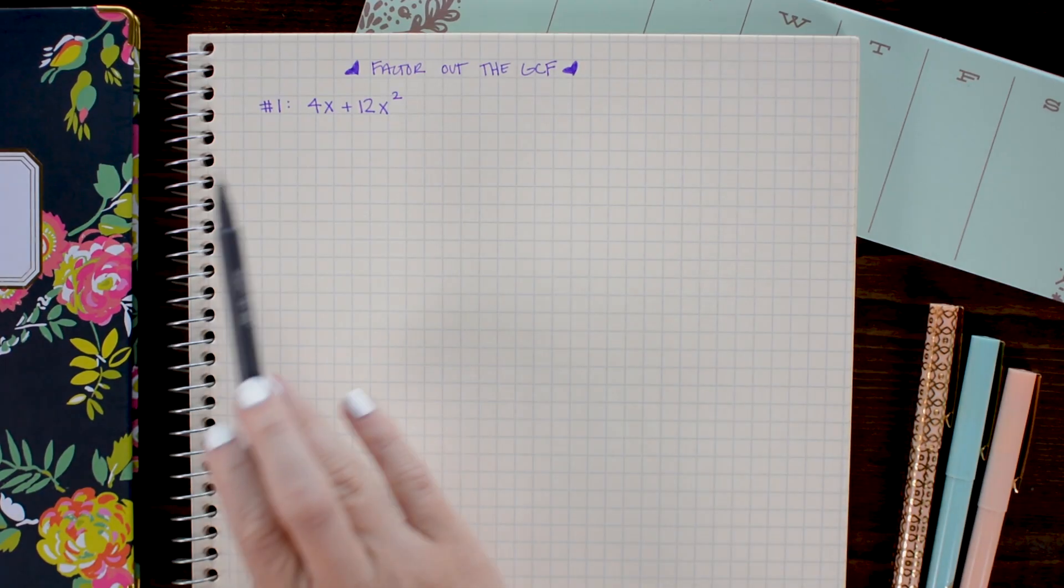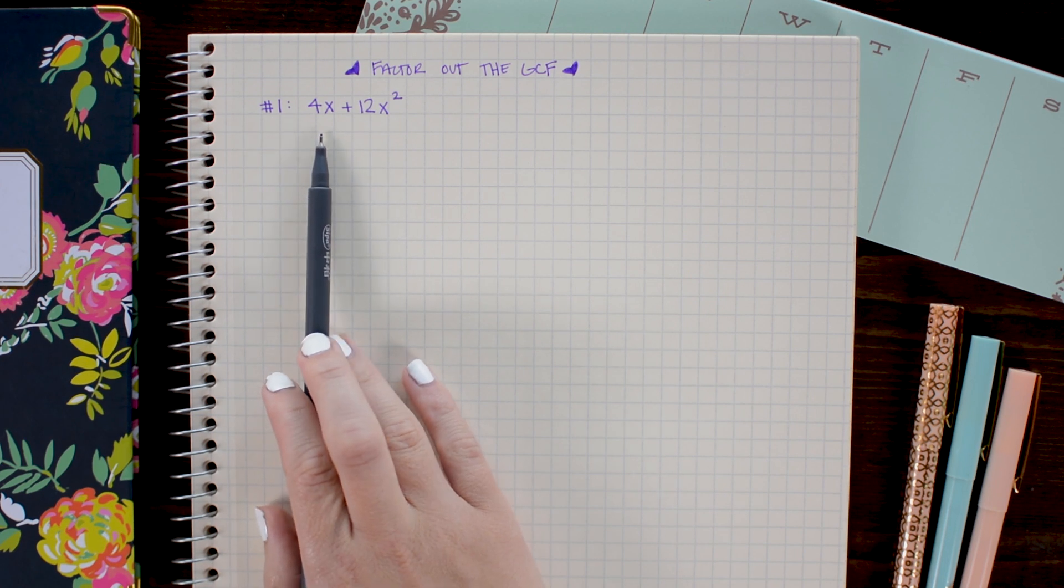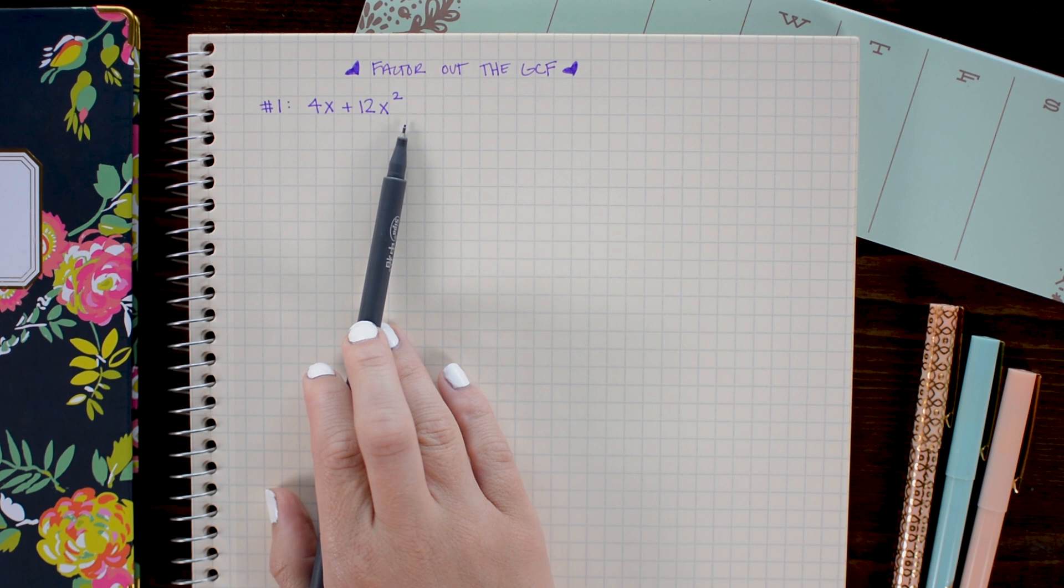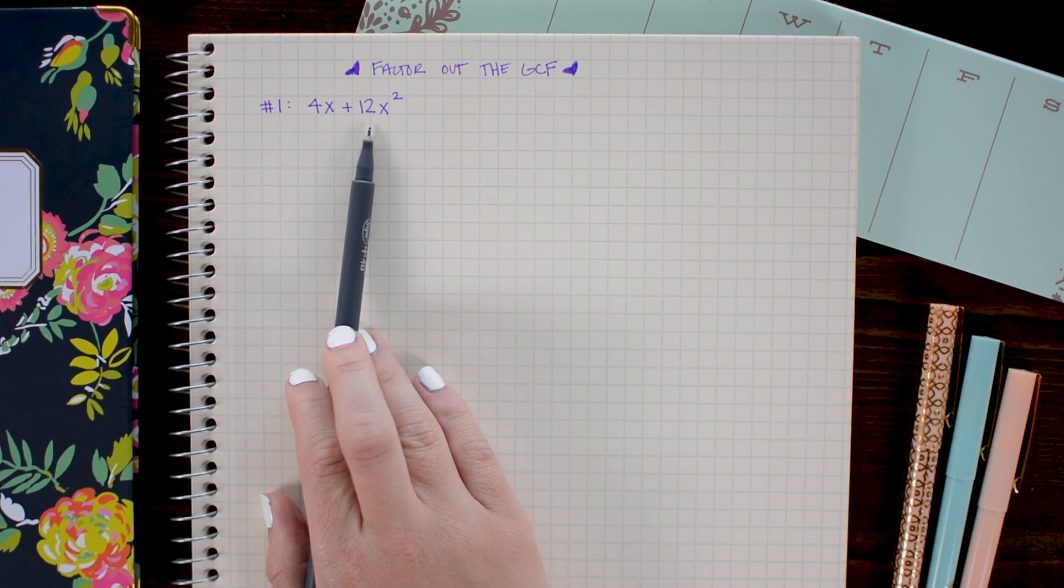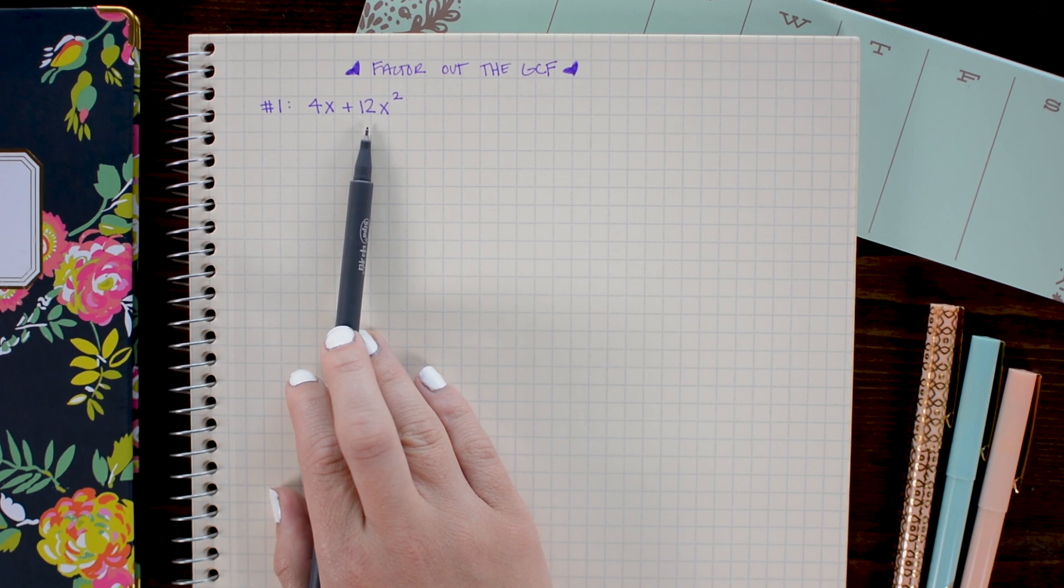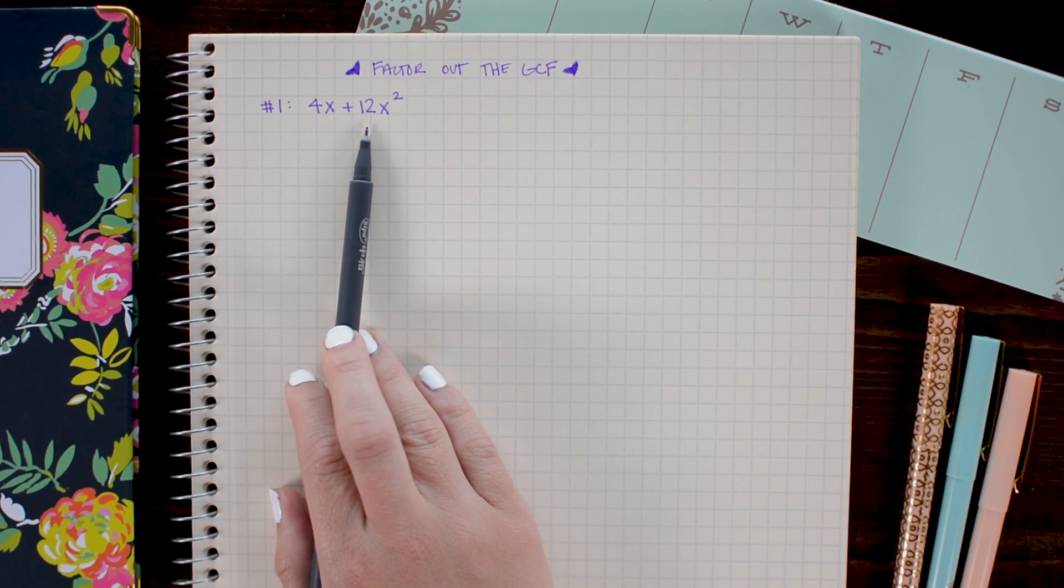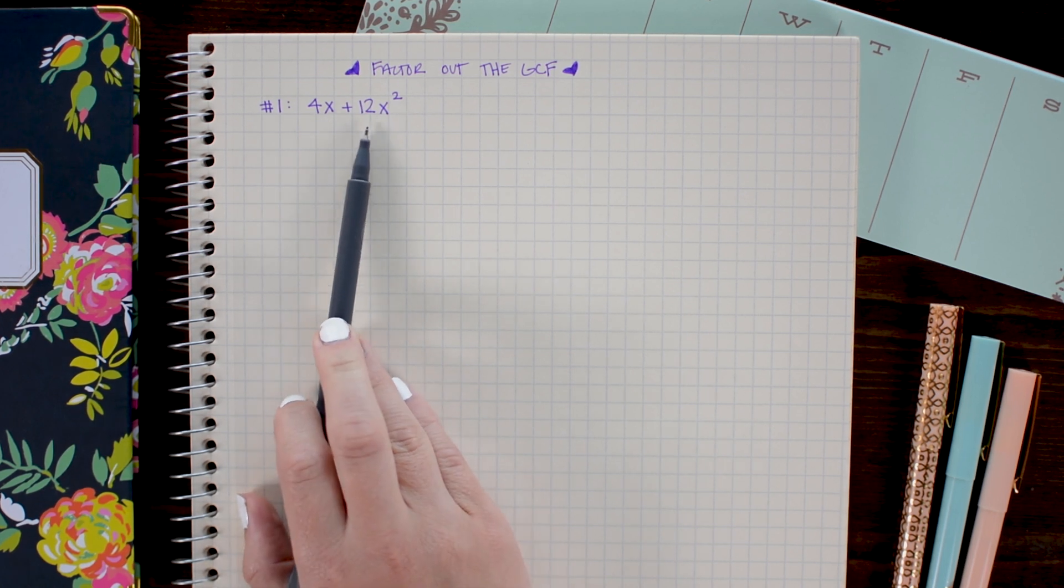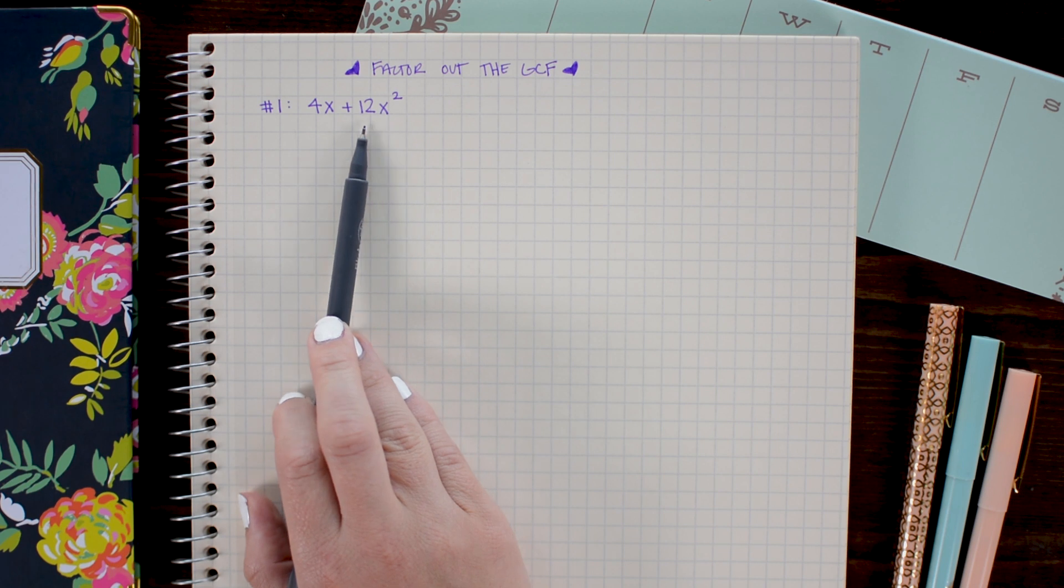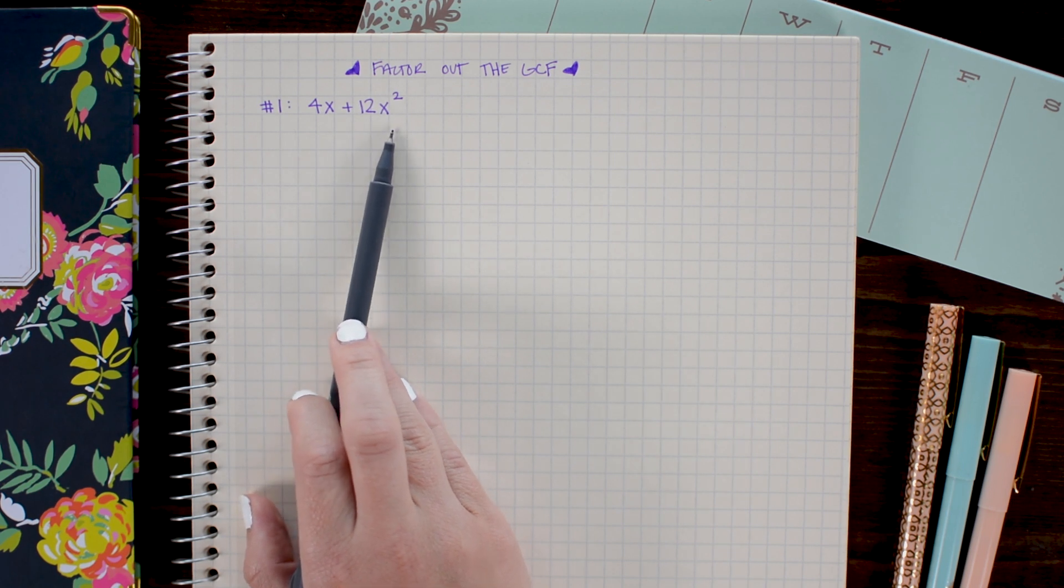In this first problem, we want to factor out the greatest common factor of 4x and 12x squared. Now, to begin, I'm going to write out these two factors longhand. And this is a step that you'll likely skip in your mathematics. In fact, after this first problem, we will skip it as well. But I just want to start with making it very obvious exactly what's going on. So I'm going to split 12x squared into 3 times 4 times x times x.